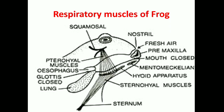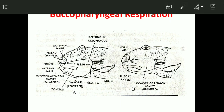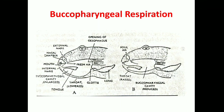The petrohyal muscle arises from the auditory capsule and attaches to the hyoid apparatus. Contraction of this muscle raises the floor or throat of the frog, reducing the size of the buccal cavity. So these two muscles — sternohyal and petrohyal — are the respiratory muscles of frog. Buccopharyngeal respiration requires participation of external nares, the pair of openings on the head through which air enters nasal chambers, then internal nares, and then the buccopharyngeal cavity.